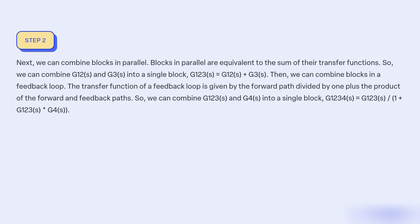Then we can combine blocks in a feedback loop. The transfer function of a feedback loop is given by the forward path divided by 1 plus the product of the forward and feedback paths. So we can combine G123(s) and G4(s) into a single block, G1234(s) equal to G123(s) / (1 + G123(s) * G4(s)).